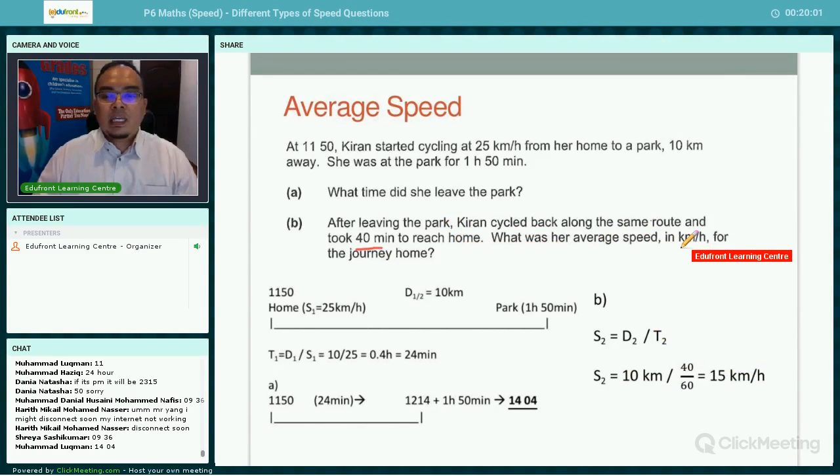Now take note, since they want the answer to be in kilometers per hour, we cannot divide by 40 because 40 is in minutes. We need to convert minutes to hours. Many students make careless mistakes here. You must ensure that the units are consistent. Kilometers per hour means the distance is in kilometers and the time is in hours. So 10 divided by 40 over 60, you get 15 kilometers per hour.